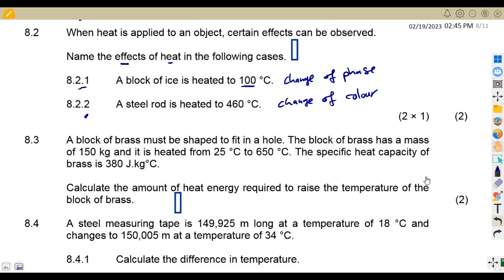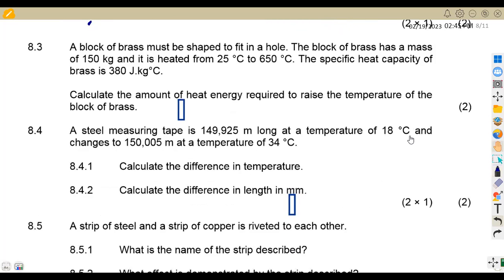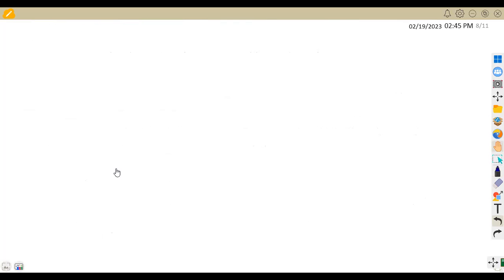Then on 8.3, we are given that a block of brass must be shaped to fit in a hole. The block of brass has got a mass of 150 kg. It is heated from 25 degrees Celsius, which is our initial temperature T1, to 650 degrees Celsius final temperature T2. The specific heat capacity of brass is 380. Calculate the amount of heat energy required to raise the temperature of the block of brass. Take note, we are calculating heat in this case, where we know that Q representing heat is equivalent to mass times the specific heat capacity times the change in temperature, where the change in time simply means T2 minus T1.